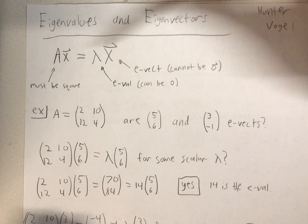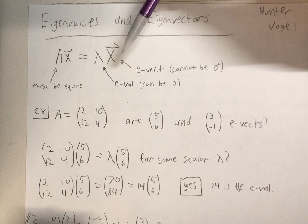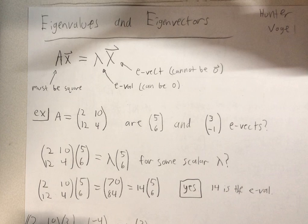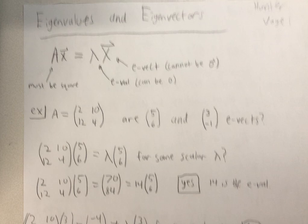Okay, so eigenvalues and eigenvectors. For an equation AX equals lambda X, where A is a square matrix and X is a vector that is not zero, is not the zero vector, lambda is the eigenvalue of A and X is the eigenvector of A.